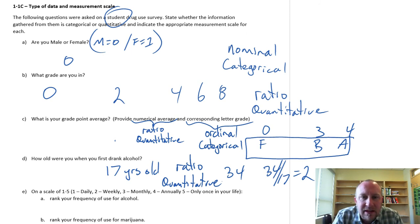Okay, the last question. On a scale of 1 to 5, rank your frequency of use of alcohol and rank your frequency of use of marijuana. And so here we have our scale ranging from a 1 is daily to a 5 is only once ever in your life. So here we have a numeric response. That could be anything in terms of nominal, ordinal, interval, or ratio.